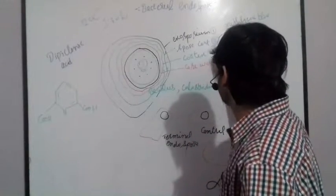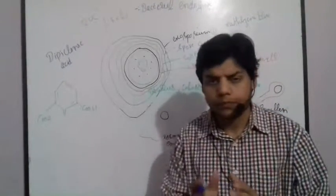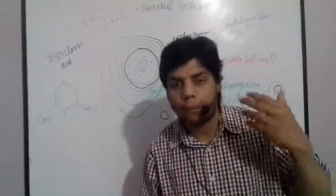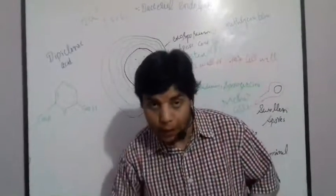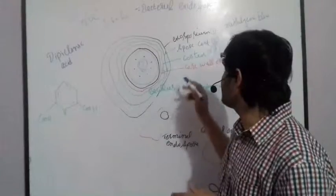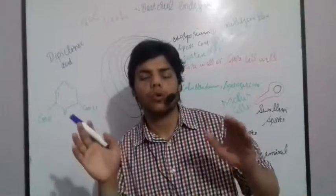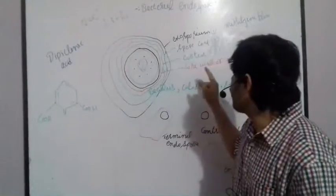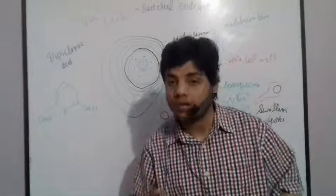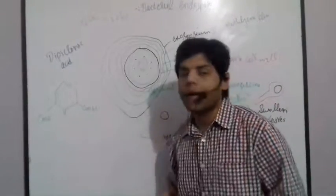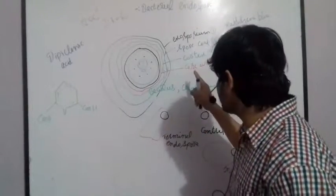The third layer is called the cortex. The cortex is the third layer of the bacterial endospore and is made up of peptidoglycan. It is present beneath the spore coat. The cortex is responsible to remove water from the cell — it is involved in the dehydration process. Because of this, such bacteria are resistant to heat. The cortex can also occupy the whole spore volume as it is very thick.